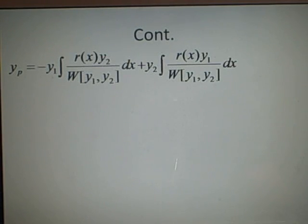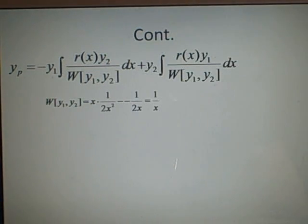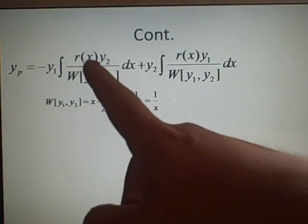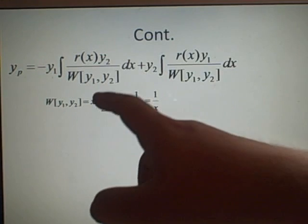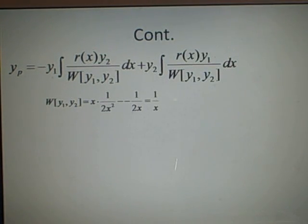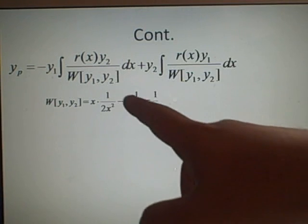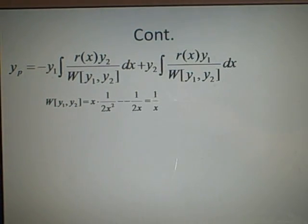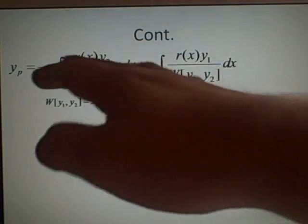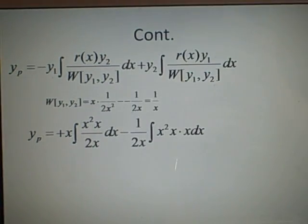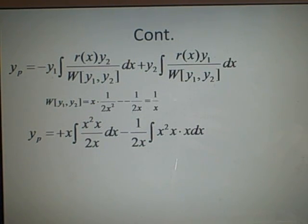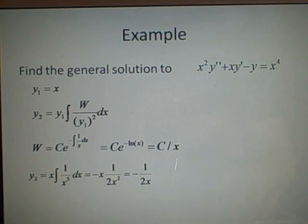So we've got our y1 and y2. Now we can put them into the formula. First, we find the Wronskian for y1 and y2: x times the derivative of the second term (which is 1 over 2x squared) minus the derivative of the first (which is 1) times y2 (which is minus 1 over 2x). This gives 1 over x. Our r(x) is x squared because we've divided by x squared, and y2 is minus 1 over 2x.